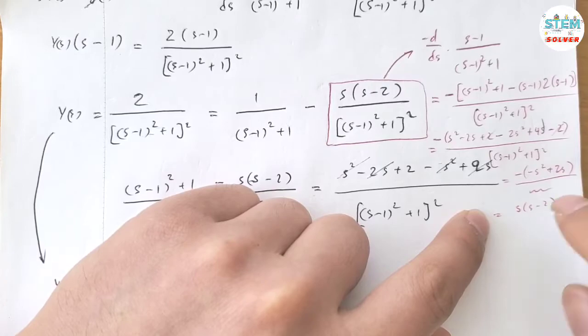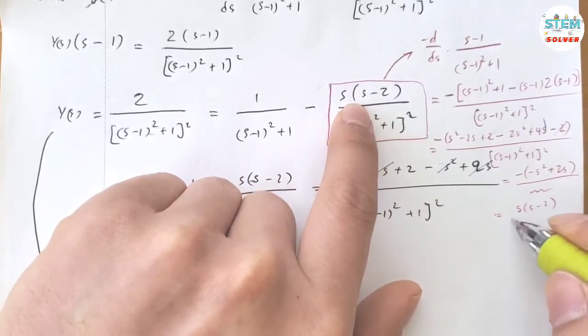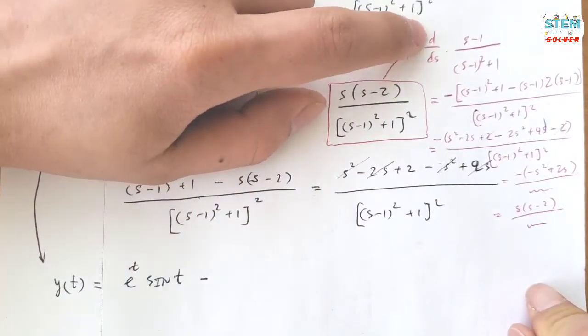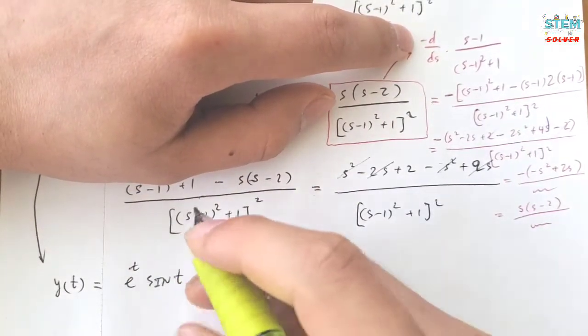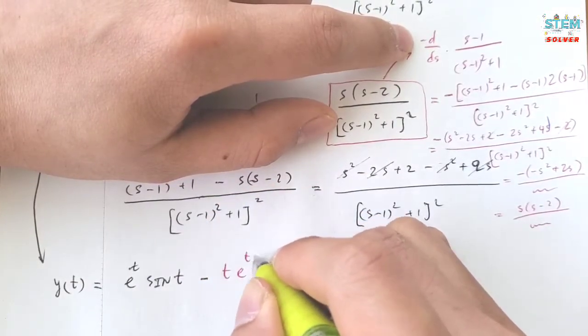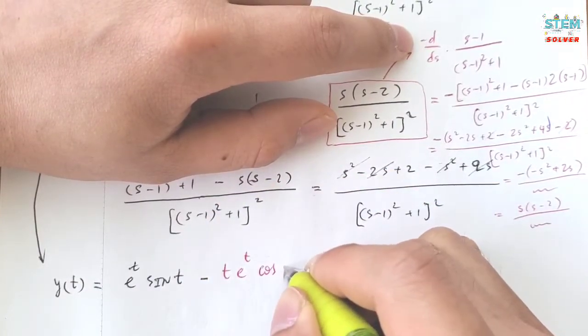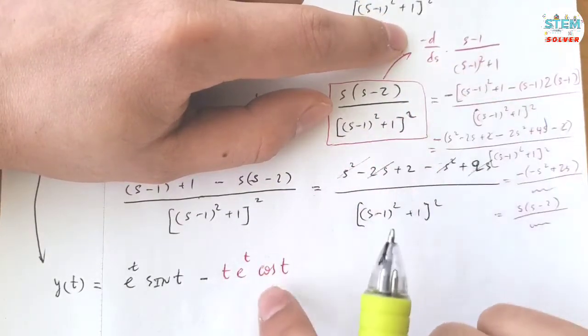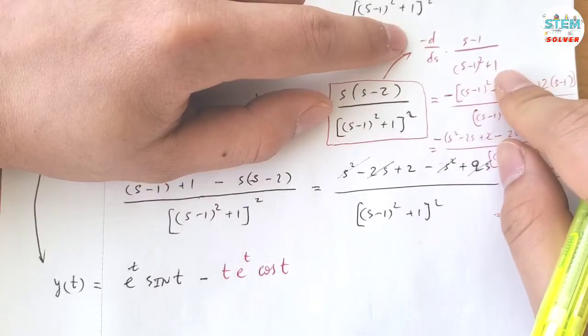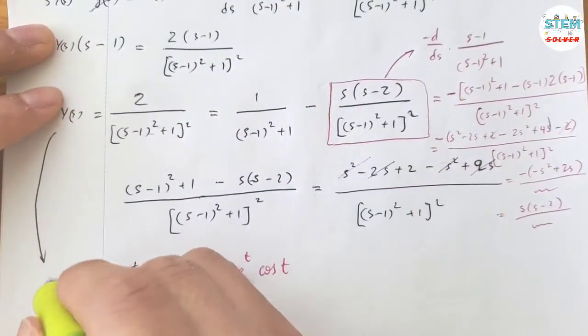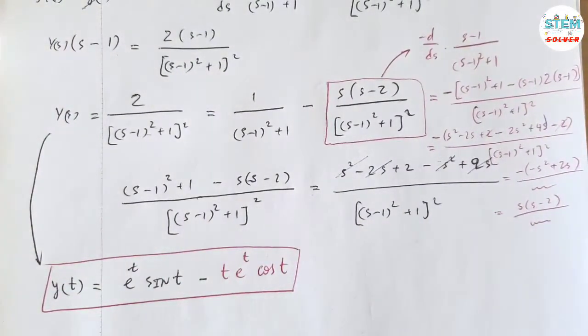That means that this can be written as this. And the derivative of this one is going to be t e to the t cosine t, right? So you have t because we have the derivative here. Cosine t, which is s over s square plus 1. And e, which is the shift here, s minus 1. So I hope it helps. Alright, so this is your final solution eventually. That's it.